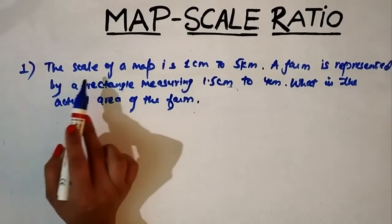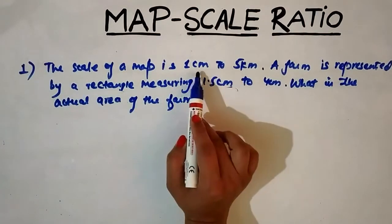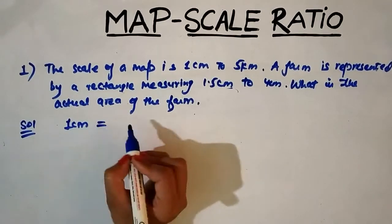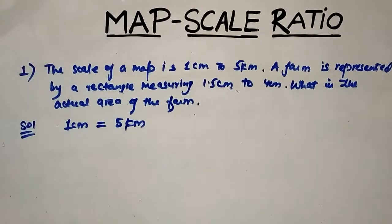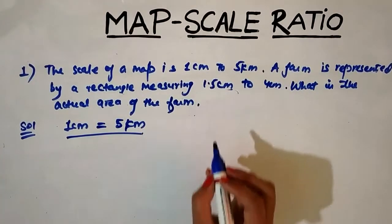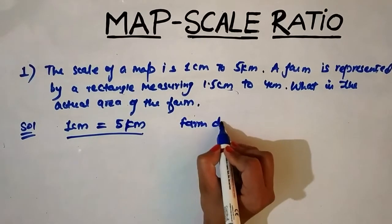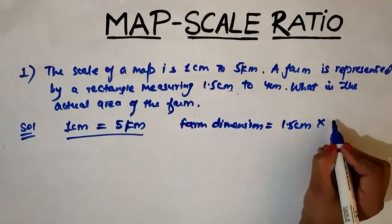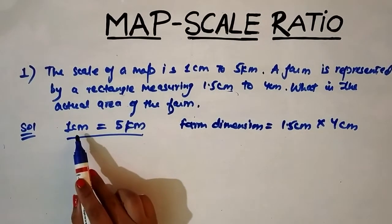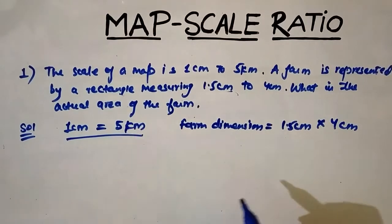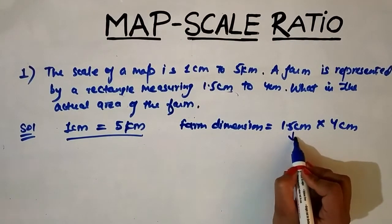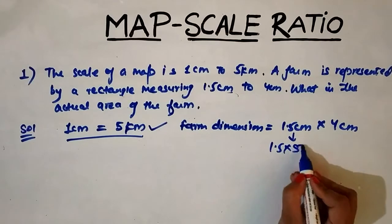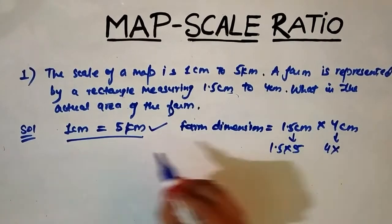Now the first question: the scale of the map is 1 centimeter to 5 kilometers, that is, 1 centimeter on the map equals 5 kilometers in reality. The farm dimension we have is 1.5 centimeters by 4 centimeters. Since 1 centimeter equals 5 kilometers, to convert 1.5 centimeters we multiply by 5. Similarly, 4 centimeters is also multiplied by 5.